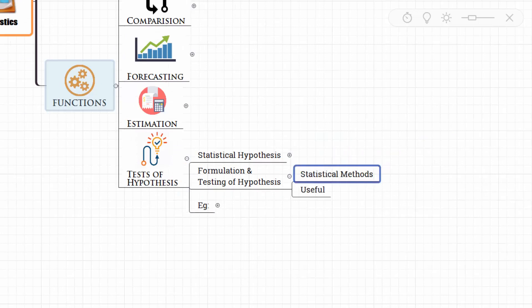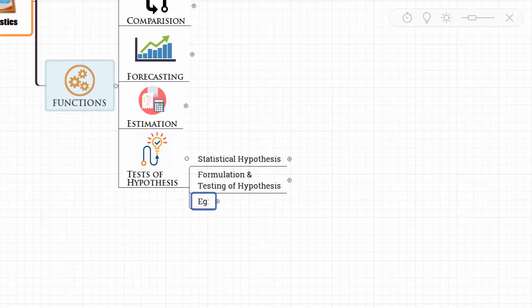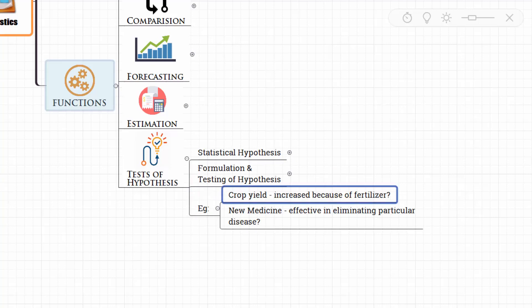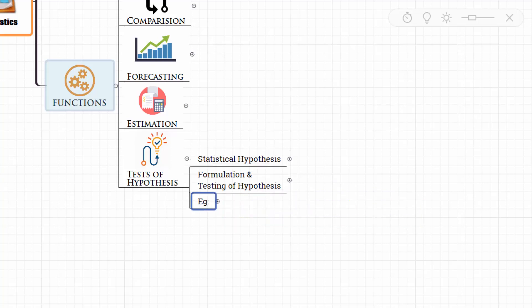The formulation and testing of hypothesis are useful statistical methods. To understand this better, just have a look at this example. We are trying to understand whether crop yield has increased because of fertilizer. If yes or no, then we are making a statistical hypothesis. New medicine, is it effective in eliminating a particular disease? We are making a statistical hypothesis. So these are the broad functions of statistics.